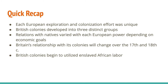In recap: each European exploration and colonization effort was unique, so you need to differentiate what was unique about each one. The British colonies developed into three distinct groups: New England, the middle colonies, and the southern plantation colonies. Relations with natives varied with each European power depending on their economic goals — Britain arguably had the worst relationship, while the French and Spanish intermarried and had more amicable relations in various instances. Britain's relationship with its colonies changed over the 17th and 18th centuries, and the British colonies began to utilize enslaved African labor. We will continue with Period 2 in the next lecture.